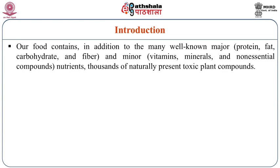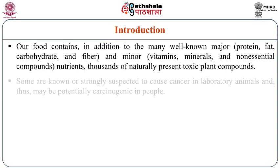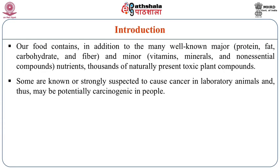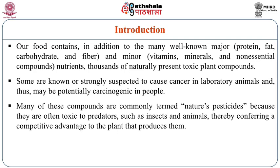Our food contains, in addition to the well-known major nutrients like carbohydrates, proteins, fat and fiber, and minor nutrients like vitamins, minerals and non-essential components, thousands of naturally present toxic plant compounds. Many of these compounds are commonly termed as nature's pesticides because they are often toxic to predators such as insects and animals, thereby conferring a competitive advantage to the plants that produce the toxins.